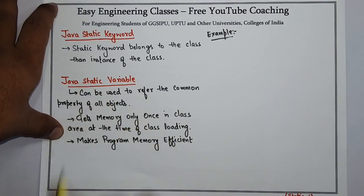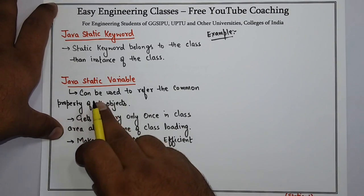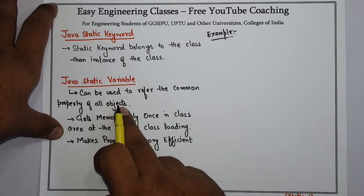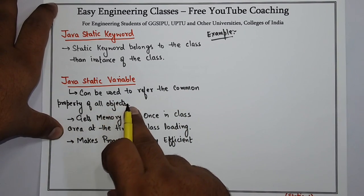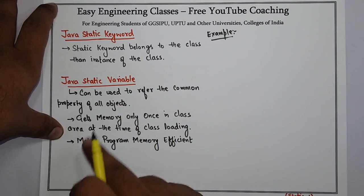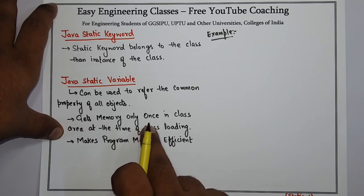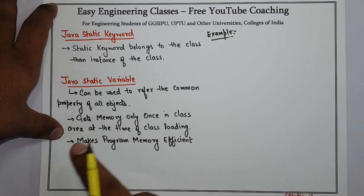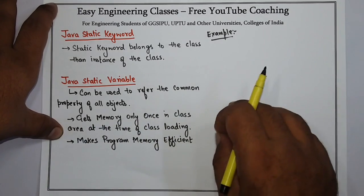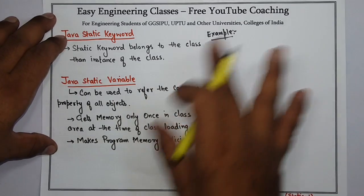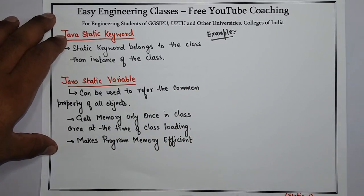Now let's see what is Java Static Variable. Java Static Variable can be used to refer to the common property of all objects. It gets memory only once in the class area at the time of class loading and makes the program memory efficient. It will be clear with the help of an example.